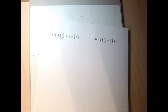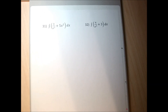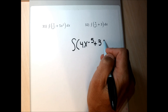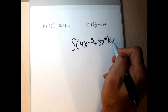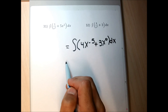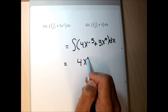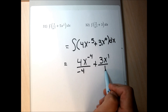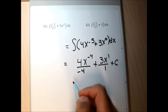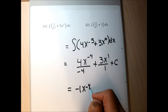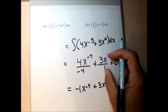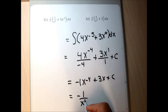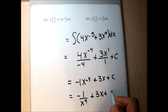Problem 32: the first term has x in the denominator, so I move it up with a negative exponent. The second piece doesn't have an x, so I give it x to the zero. Now I add 1 to each exponent: negative 5 plus 1 is negative 4, divide by negative 4; for the second, I get 3x to the first over 1. Tack on plus C. Simplifying: 4 divided by negative 4 is negative 1, giving negative 1 times x to the negative 4. Moving the x to the denominator: the final answer is negative 1 over x to the fourth plus 3x plus C.